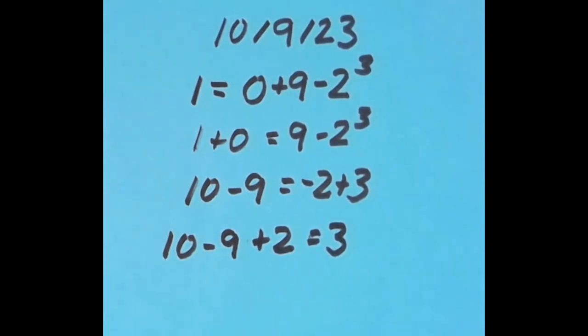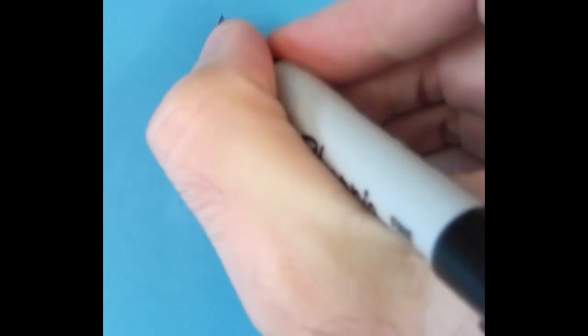So that's what I chose to do for today's date, but I'm sure there are lots of other ways to make true equations. If you found some ways that were interesting to you, please put those in the comments. Now tomorrow's going to be October 10th, so we can write the date as 10-10-23. Go ahead and see if you can come up with an equation for the digits in this date.